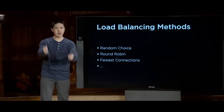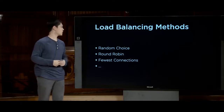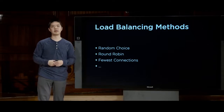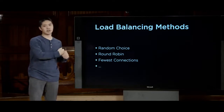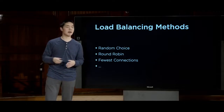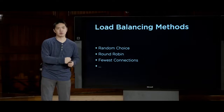There are many approaches a load balancer might take. Random choice is the simplest: given a user request, the load balancer randomly assigns them to one of the available servers. This is simple and fast, but we might get unlucky and end up with many more users on one server than another, or with some servers entirely unused.